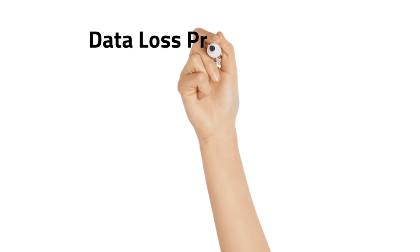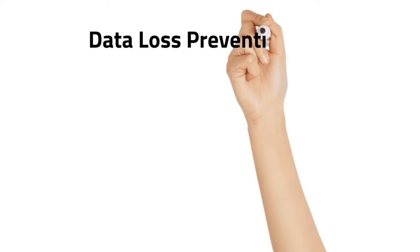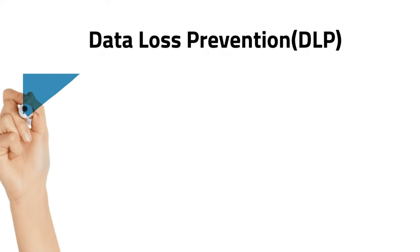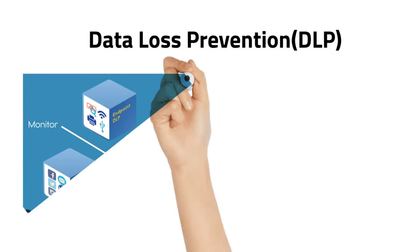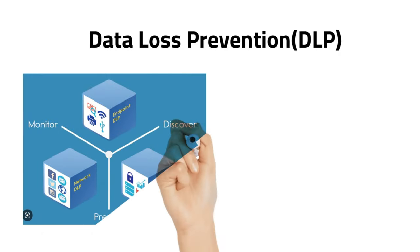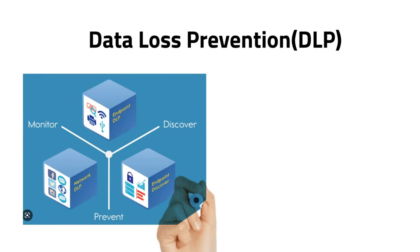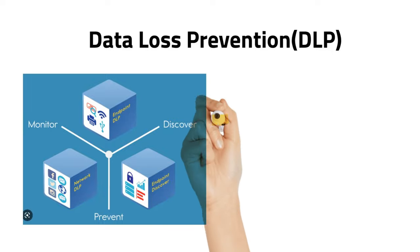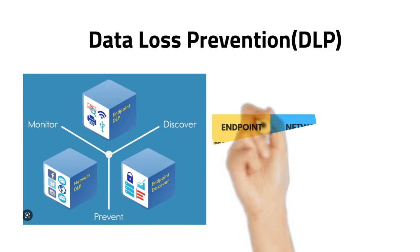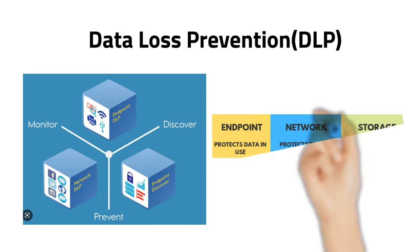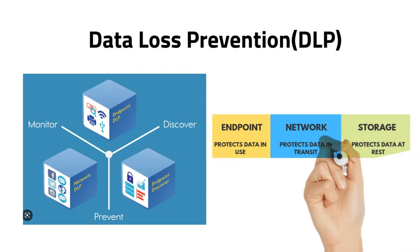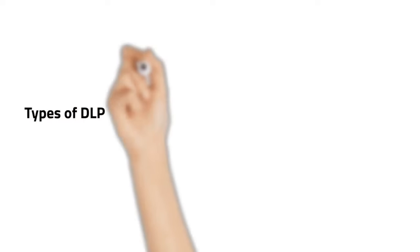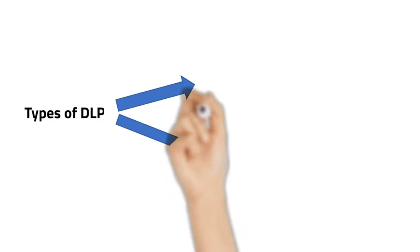Today we are going to see what is Data Loss Prevention, DLP. It is used to detect and block data exfiltration attempts. This system has the capability of scanning unencrypted data, looking for keywords and data patterns. For example, a social security number — the DLP can look for this pattern undetected.